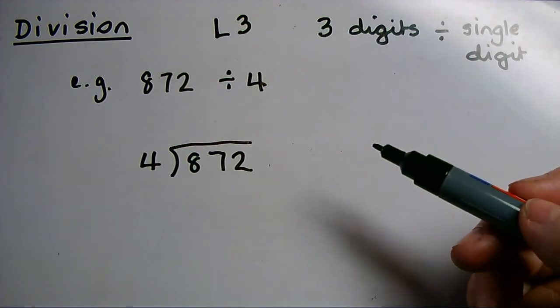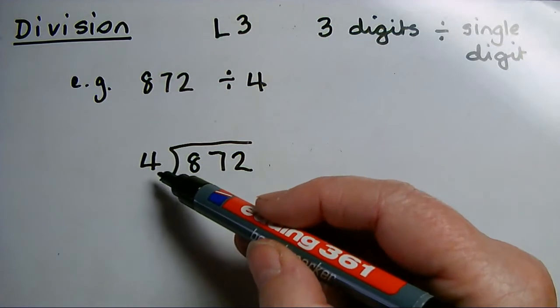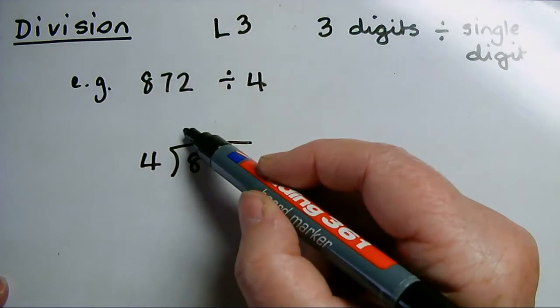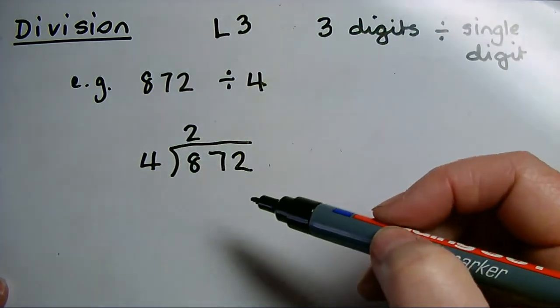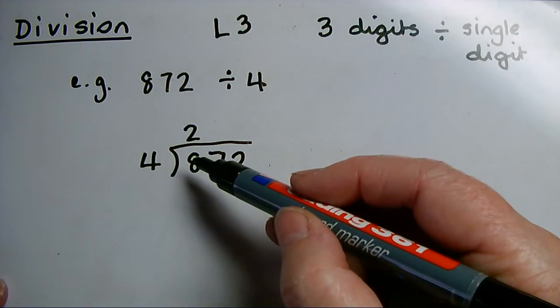Then I start from the left-hand end of the number, the largest place value, and I say, how many 4s could I get out of just 8? How many 4s in 8 is 2. The answer goes over the top. I've used the whole of the 8, so there's nothing to carry, so now I can proceed into the tens.